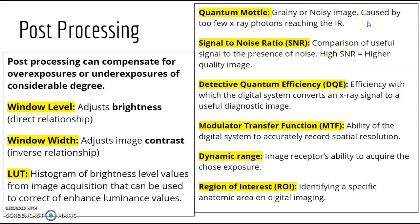Quantum mottle is when the image looks grainy or noisy — too few x-ray photons have reached the image receptor. Signal to noise ratio: you always want a high SNR, meaning less noise and more signal. Signal means x-ray, so you want more actual x-ray versus noise on your image for a higher quality result.